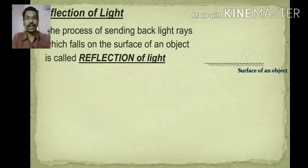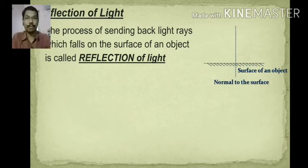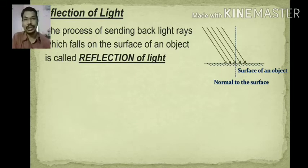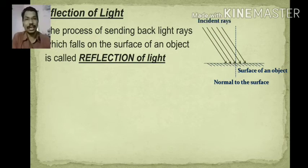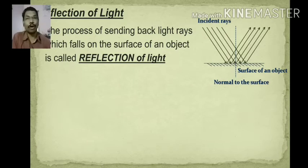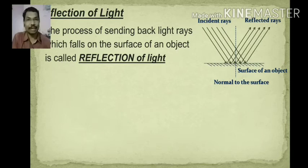Let us see a surface and a dotted line which is the normal to the surface, meaning perpendicular to the surface. The rays coming from the object or source are called incident rays. As they are incident on the surface, they will get bounced back, and these are called reflected rays. This entire process or phenomenon is called reflection of light.